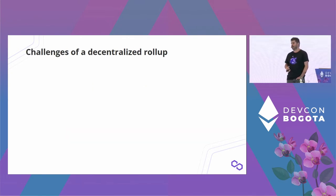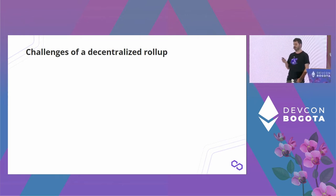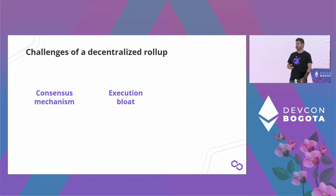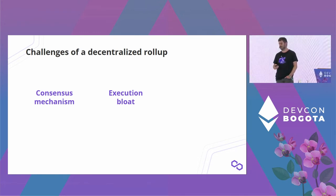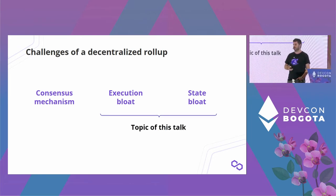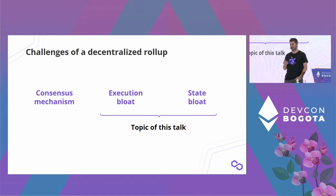Compared to a centralized rollup with only one operator, a decentralized rollup has a number of challenges. The most important ones are: you need a separate consensus mechanism, you have the execution bloat problem, and you have the state bloat problem. In this talk I'm going to focus specifically on execution bloat and state bloat.